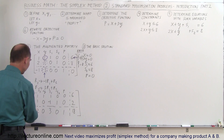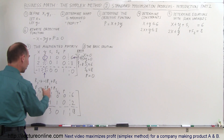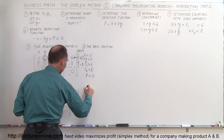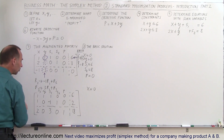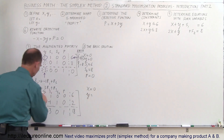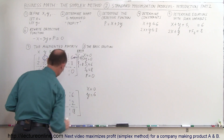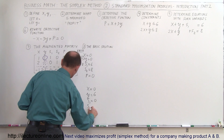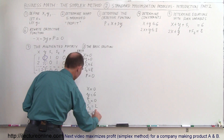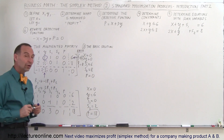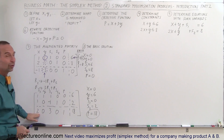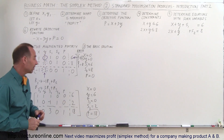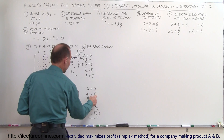Looking at this intermediate result: x is still 0 because its column doesn't have the 1-and-zeros form. Y is now equal to 6, S1 is 0, S2 is equal to 2, and the profit is now 18. We continue pivoting until all bottom-row numbers are zero or greater than zero — and they already are, so we're basically done. We've found the maximum profit of 18, achieved when x equals 0 and y equals 6.